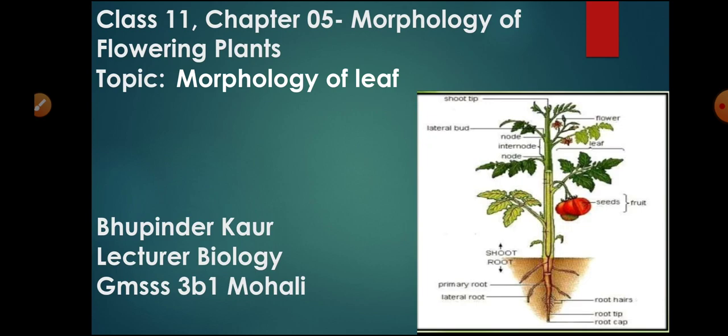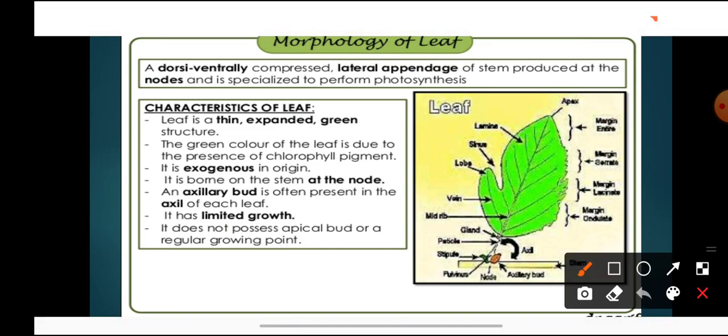Dear students, root, stem, leaf — all of these are vegetative parts of the plant. Now, what is a leaf? Leaf is a dorsi-ventrally compressed lateral appendage of stem produced at the nodes. We all know that stem is differentiated into nodes and internodes, and at the node area, leaves are present.